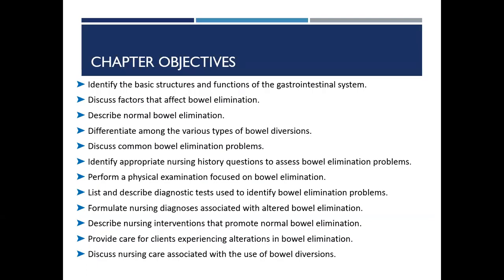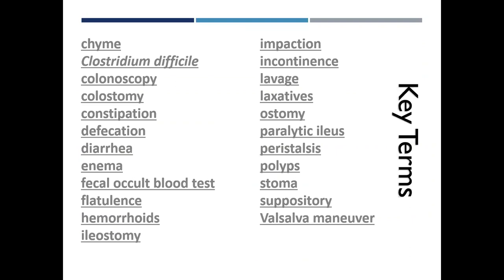These are your chapter objectives that are in your F.A. Davis book. These are key terms that you can find in your book, and if you can't find them in your book and you don't pick them up on this lecture, you can find them in your textbooks.